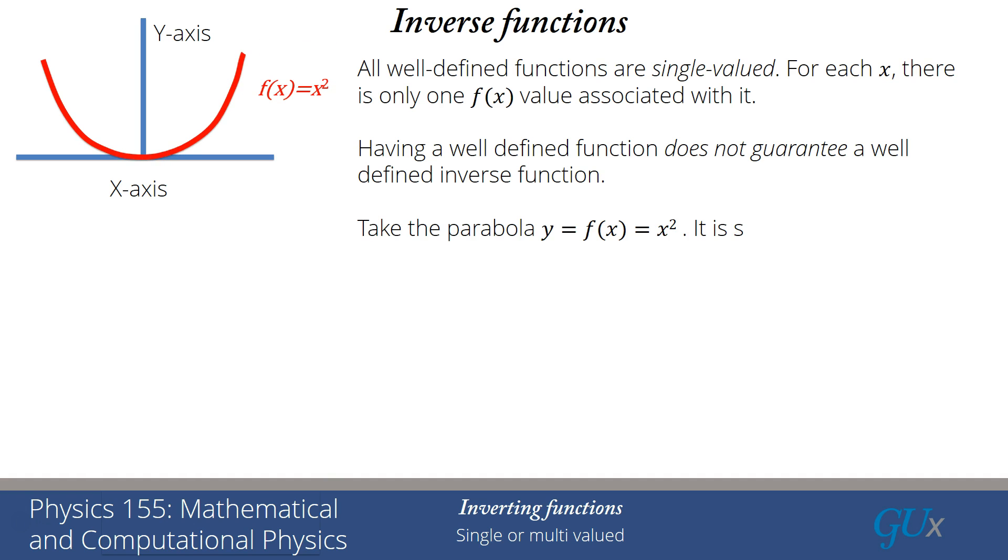So let's take an example of the parabola, which is the curve given in red. y equals f(x) equals x squared. It is single-valued as indicated by each of the green points. When x is equal to a green value, there's only one red value lying above it.